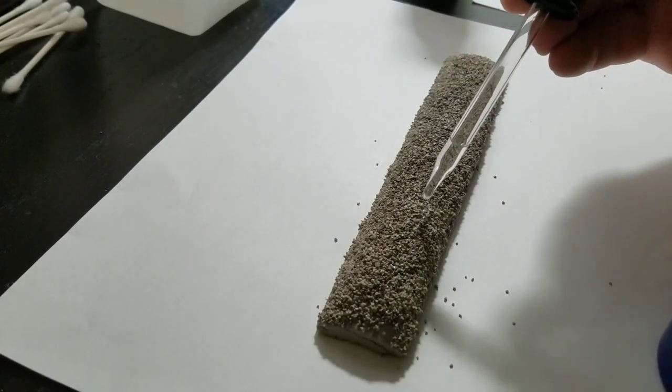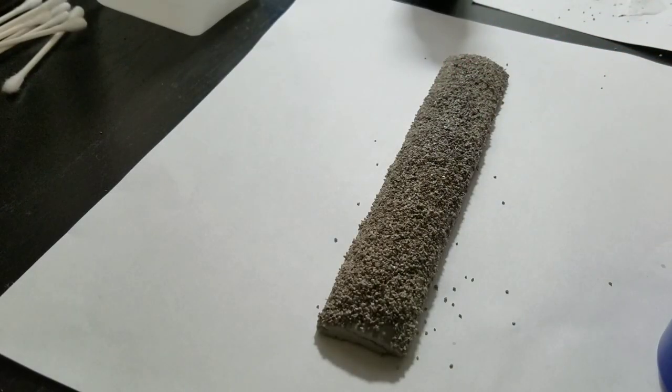Here I'm applying a diluted surface coat of alcohol in preparation to the top layer of glue.